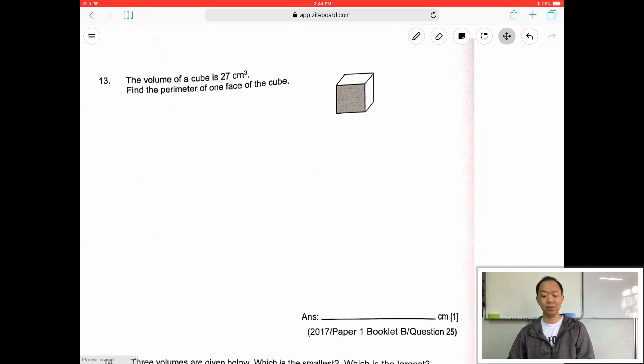The volume of the cube is 27 cm³. Find the perimeter of one face of the cube. Now, since the volume is 27, what we want to do is find a number here multiplied by itself 3 times will give you 27. What is that number? It's 3. Because 3 times 3 times 3 will give you 27. So we want one face of the cube. One face of the cube is just 3 times 3 equals to 9 cm².